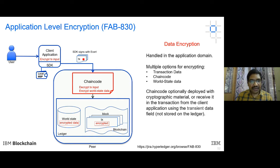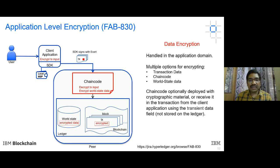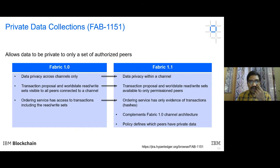When the chaincode executes, it decrypts the transaction. At the end of execution, the world state — which tracks keys and values — was earlier stored in plain text but will now also be encrypted. This is one kind of confidentiality achieved through application-level encryption.